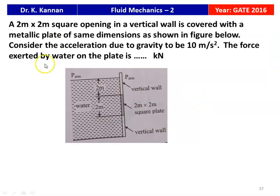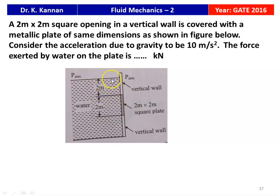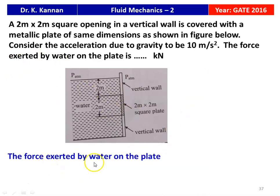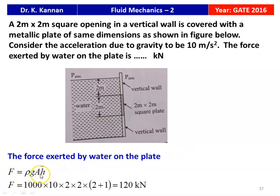The next question is also from the 2016 question paper. A 2-meter by 2-meter square opening in a vertical wall is covered with a metallic plate of the same dimension. Take g equal to 10 m/s². The height above the gate to the free surface of water is 2 meters. The force exerted by the water on the plate equals F equals rho·g·A·H̄, where rho equals 1000, g equals 10, area equals 2×2, and H̄ equals 2 plus 1 equals 3 meters. The answer is 120 kilo Newton.